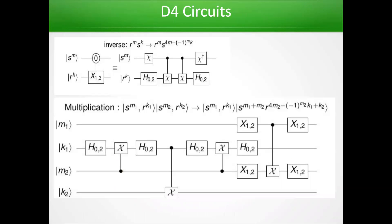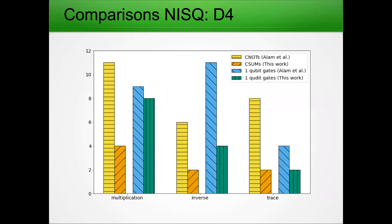Similarly, if we go to D4, we can break up our circuits where we just need single-qudit operations that are shifts and Hadamard transforms on two different states for the inverse, or multiplication operations involving Hadamards, X gates, and controlled-sum operations. When we compare the costs — single-qudit gates are blue and green, and entangling gates are yellow and orange — qubits are going to take more gate operations than a qudit operation will. This suggests that encoding through this manner might be more advantageous for NISQ-era simulation.